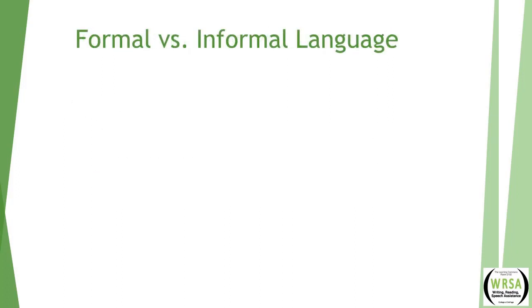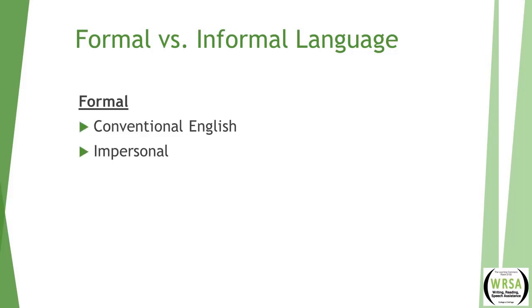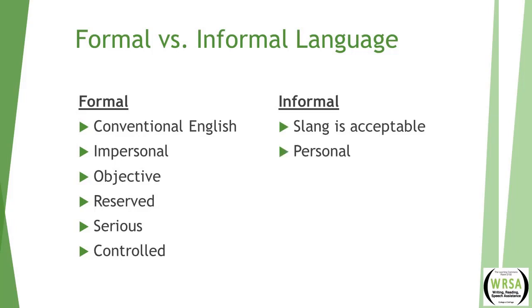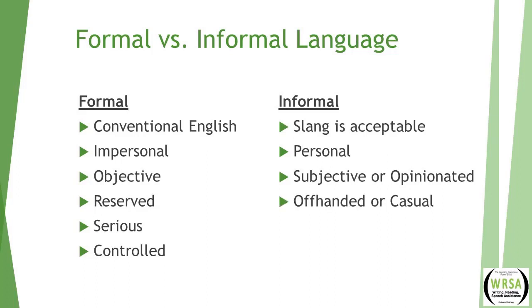Let's go over what it means to use formal or informal language and some examples. Formal language is conventional English — it is impersonal, objective, reserved, serious, and controlled. If you're using informal language, slang is perfectly acceptable. You're talking to someone you're familiar with, so it would be personal. It can be subjective or opinionated, off-handed, casual, light, or simple.